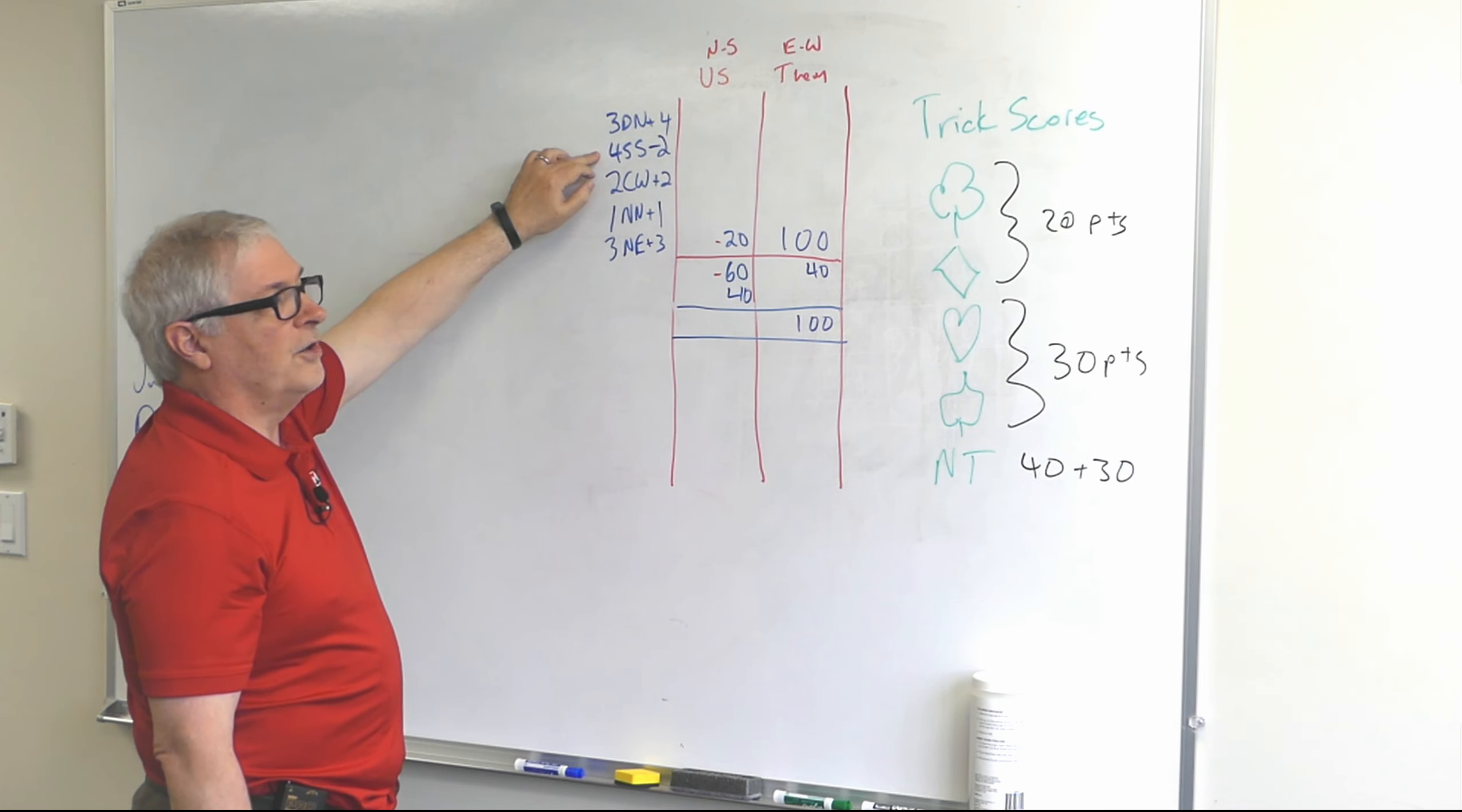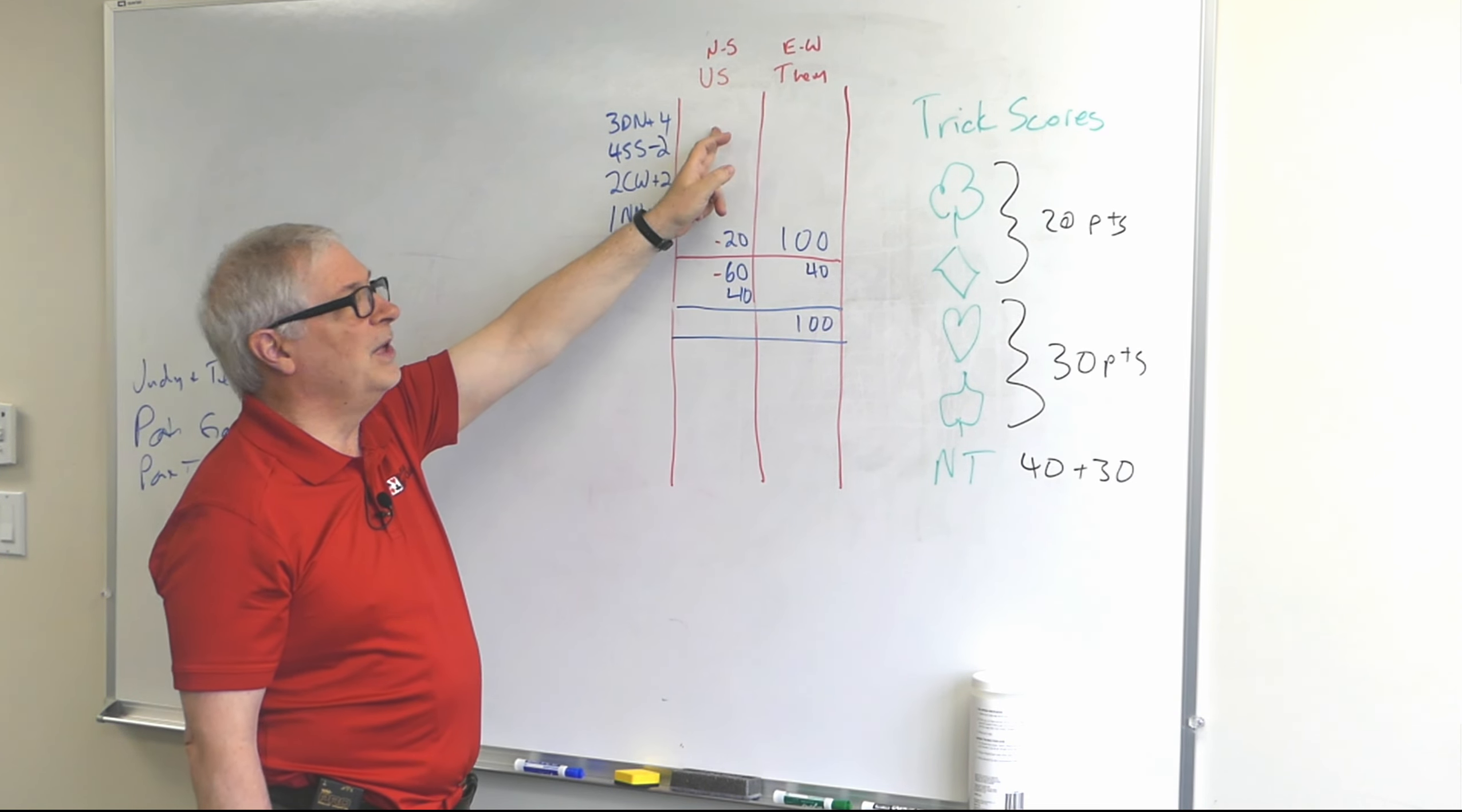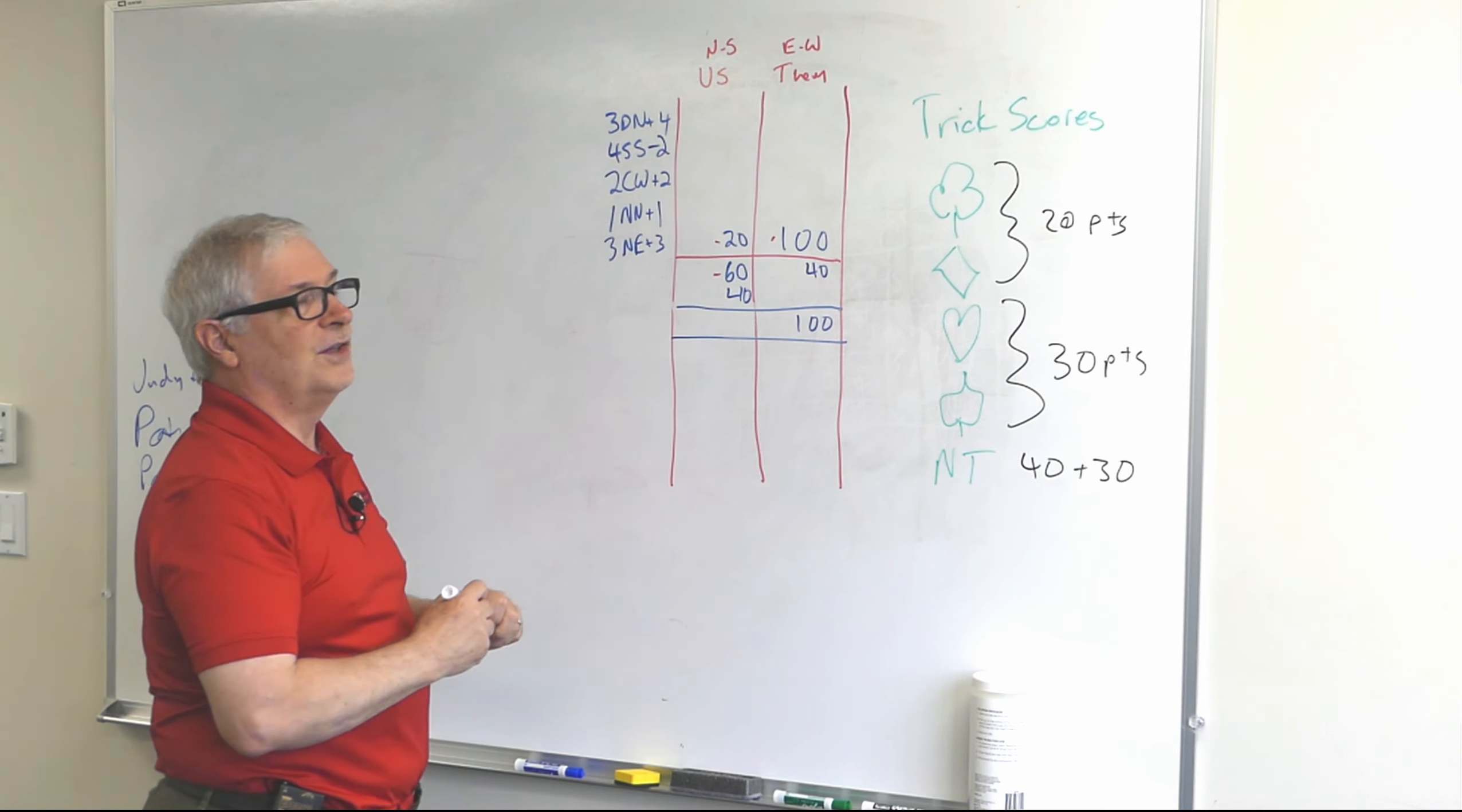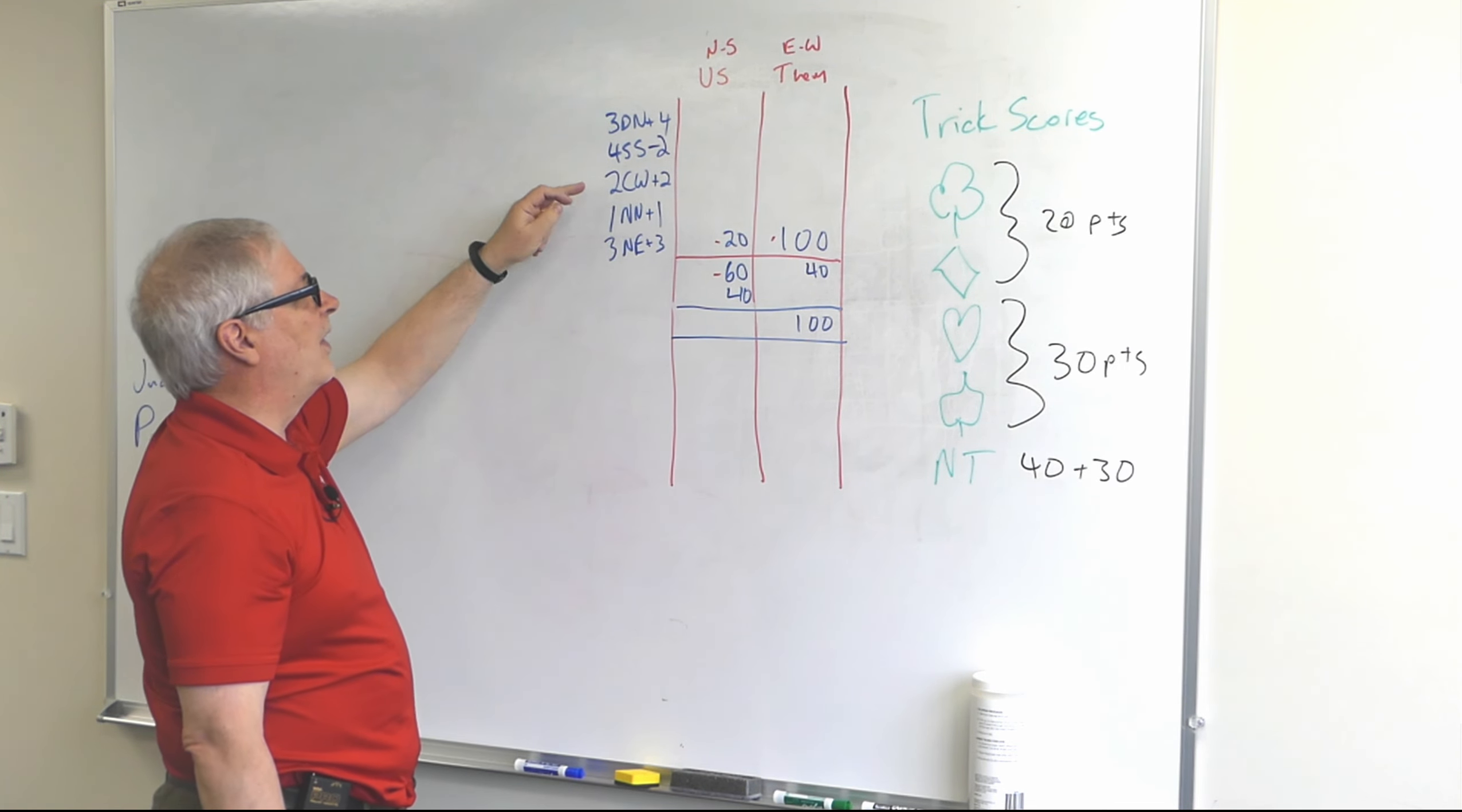Now our second contract went down. It was four spades by South, down two. That was us, we didn't make our contract. Our opponents get 50 points each for setting us, so there's the hundred points for that. Yeah, 50 times 2 is 100.